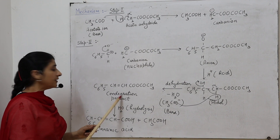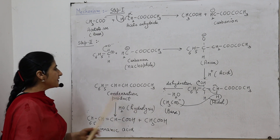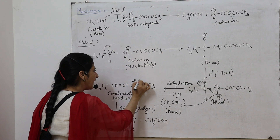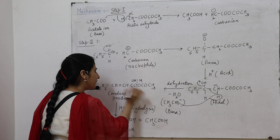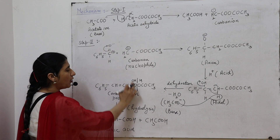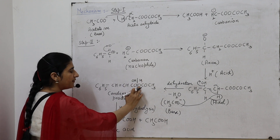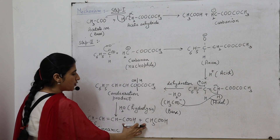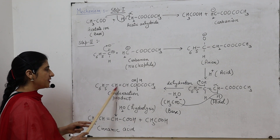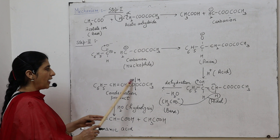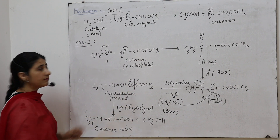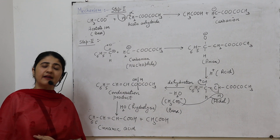This condensation product further undergoes hydrolysis — the breakdown by water, where OH and H cleave the bonds. OH combines with the CO group and H combines with the O, giving two products: number one, cinnamic acid — C₆H₅-CH=CH-COOH — and number two, acetic acid — CH₃COOH.